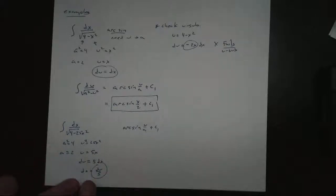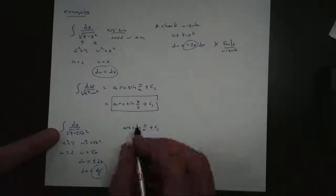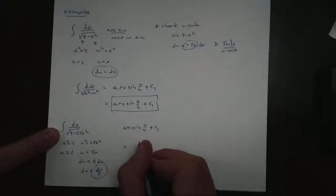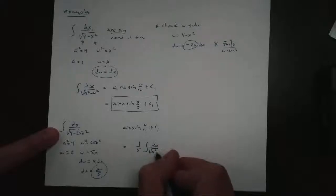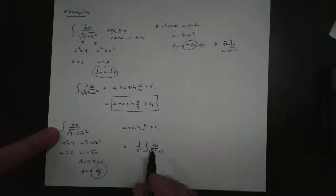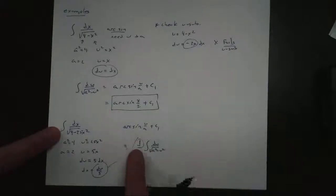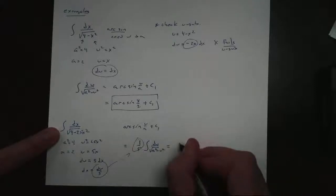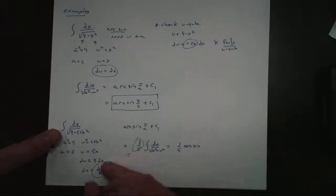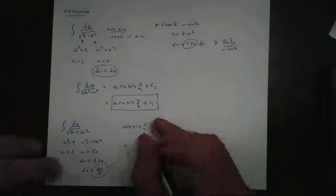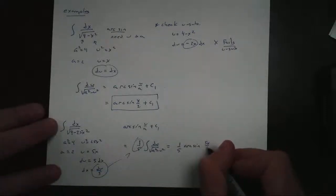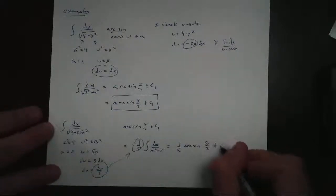Because if I were to replace this now, we would get 1/5 du over the square root of a squared minus u squared. And it's this 1/5 from right here. So it's going to be our arc sine, but we're going to have a 1/5 on the outside. So our answer is going to be 1/5 the arc sine of u, which we said is 5x, over a, which is 2, plus c.